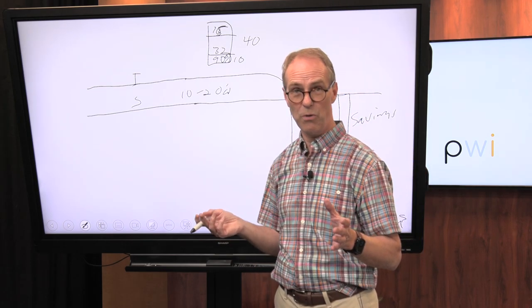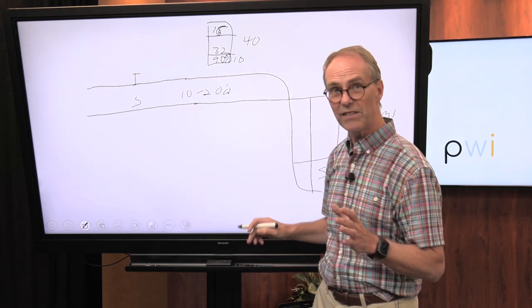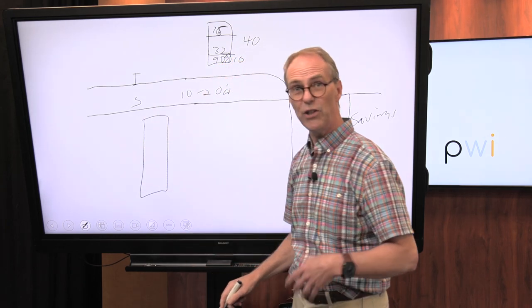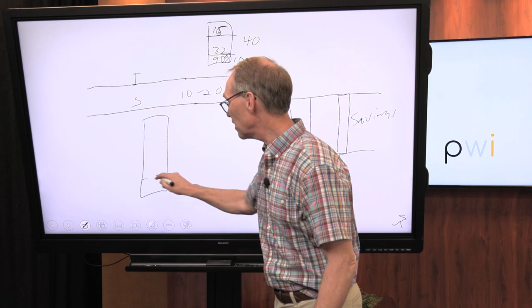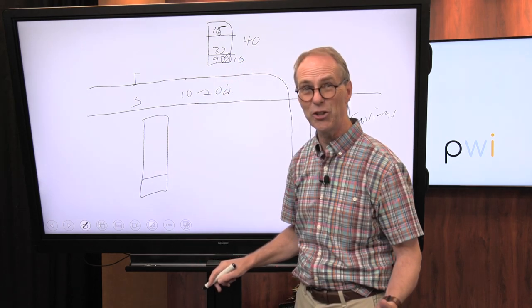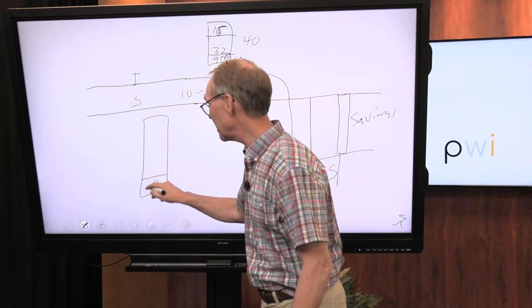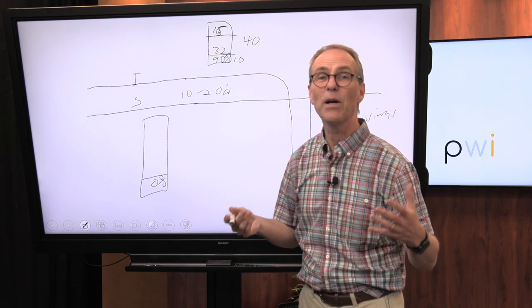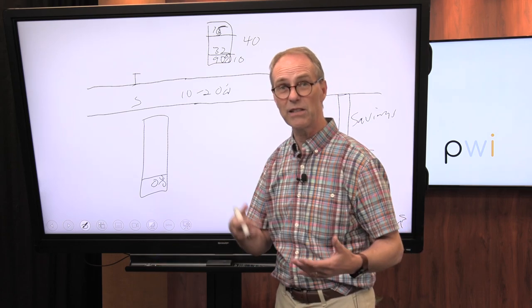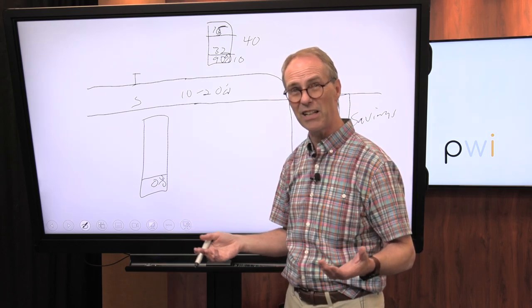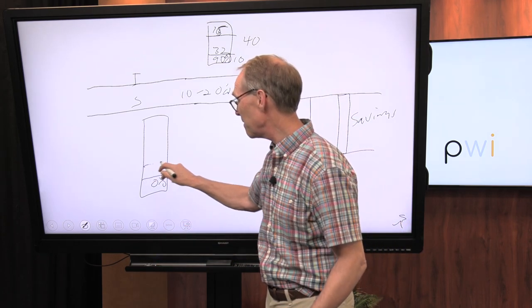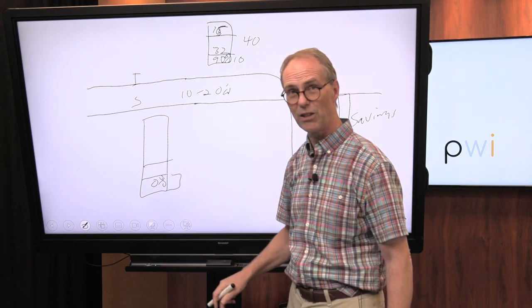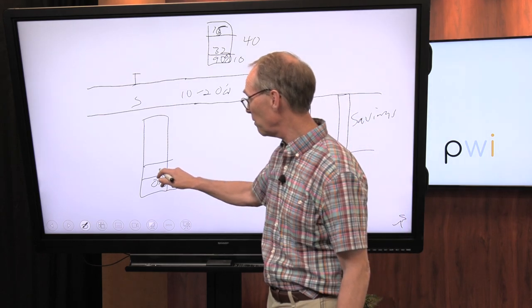That leads us to how a 401k works. When you're working and you have income, some of your income because of what's called a standard deduction is taxed at 0%. You might have some income—because of standard deduction or itemized deductions—you don't pay any taxes on.